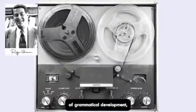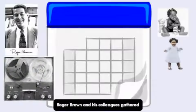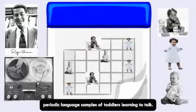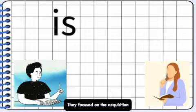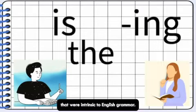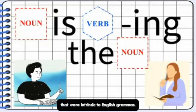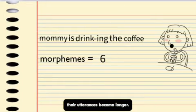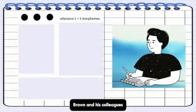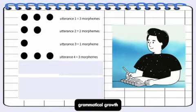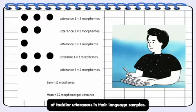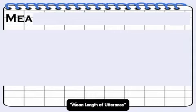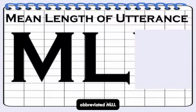In their pioneering studies of grammatical development, Roger Brown and his colleagues gathered periodic language samples of toddlers learning to talk. They focused on the acquisition of closed class words and morphemes that were intrinsic to English grammar. Naturally, as toddlers learn these items, their utterances become longer. Brown and his colleagues thought an efficient way to measure grammatical growth would be to compute the average length of toddler utterances in their language samples. They called this average mean length of utterance, abbreviated MLU.